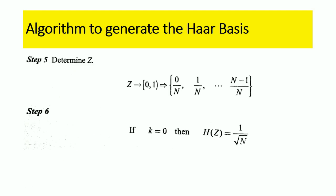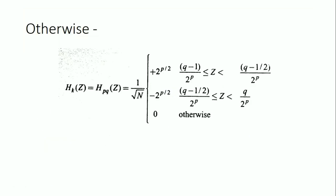In step five, we determine the z value. The z value is in between zero and one, given as 0/N, 1/N, and so on up to (N−1)/N. In step six, if k equals zero, then the Haar function h(z) equals one by root N.